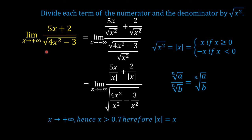We are solving for the limit as x approaches positive infinity, so x is approaching positive infinity and x is greater than 0. Therefore, we are going to use the absolute value of x being equal to positive x, because x is greater than 0. So, we can replace the absolute value of x by x and cancel x squared, leaving us with 4 minus 3 over x squared.